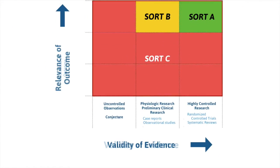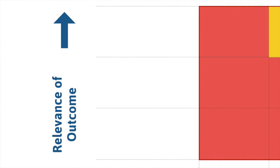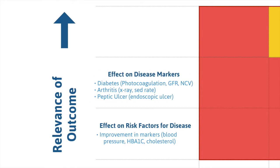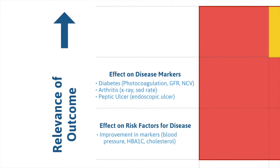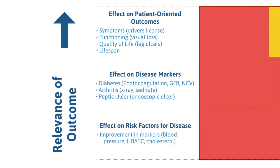The y-axis, the vertical axis, describes the relevance of the information, moving upward from less to more patient-oriented evidence. At the bottom are effects on laboratory results or measures such as blood pressure and cholesterol levels. The next level has effects on organ systems. And finally, looking at the effect of an intervention on the entire person — both the quality of their life and the quantity of their life — the patient-oriented evidence that truly matters to patients.